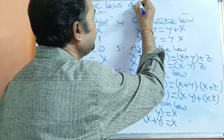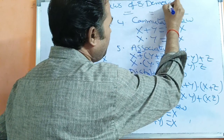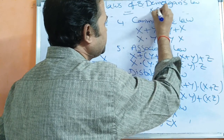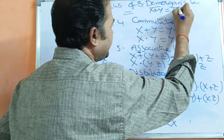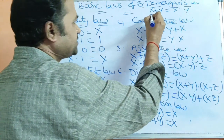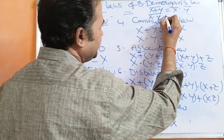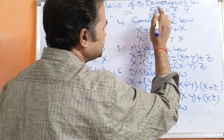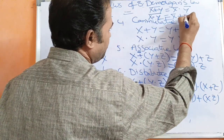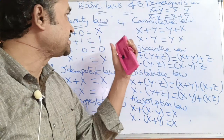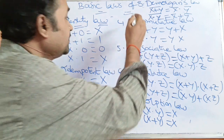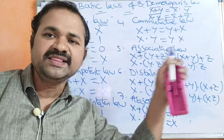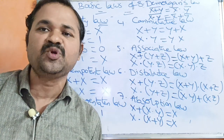The last law is De Morgan's law, and we have two types. First: x plus y, whole bar, equals x-bar dot y-bar. Second: x dot y, whole bar, equals x-bar plus y-bar. These eight are the basic laws or basic rules of Boolean Algebra, used while simplifying Boolean expressions.